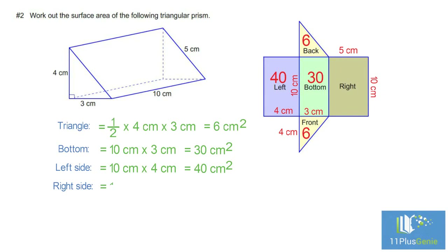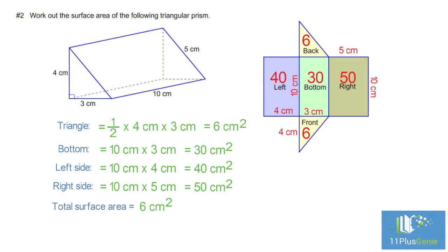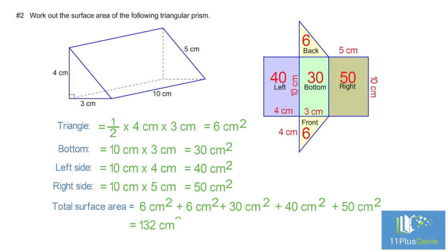The top is a rectangle. Area equals 10 centimeters times five centimeters, which equals 50 centimeters squared. The total surface area equals six plus six plus 30 plus 40 plus 50 centimeters squared, which equals 132 centimeters squared.